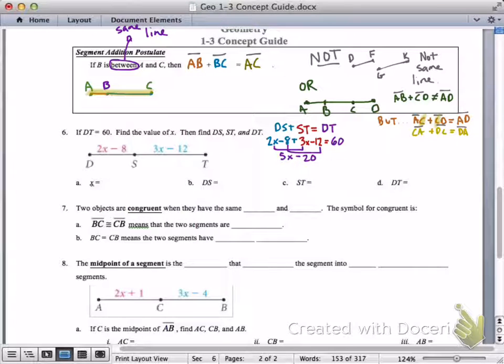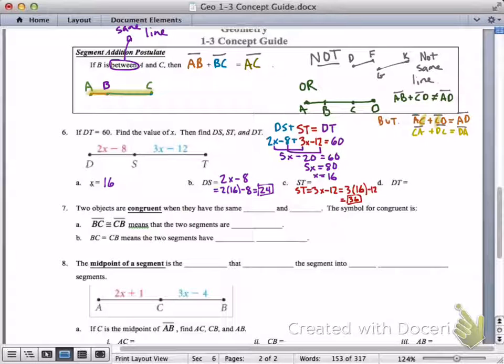5X minus 20, combining those like terms, equals 60. Add 20 to both sides. 5X equals 80. Divide by 5. X equals 16. What does DS equal? Well, now that we know what X is equal to, we can plug that in. 2 times 16 minus 8 equals 24. Do the same thing for ST. 3 times 16 minus 12 is 36. What does DT equal to? Well, it needs to equal 24 plus 36. Of course, we already know that it's 60. They told us that. But 24 plus 36 does indeed equal 60. So, we must have done something right. That's the segment addition postulate.